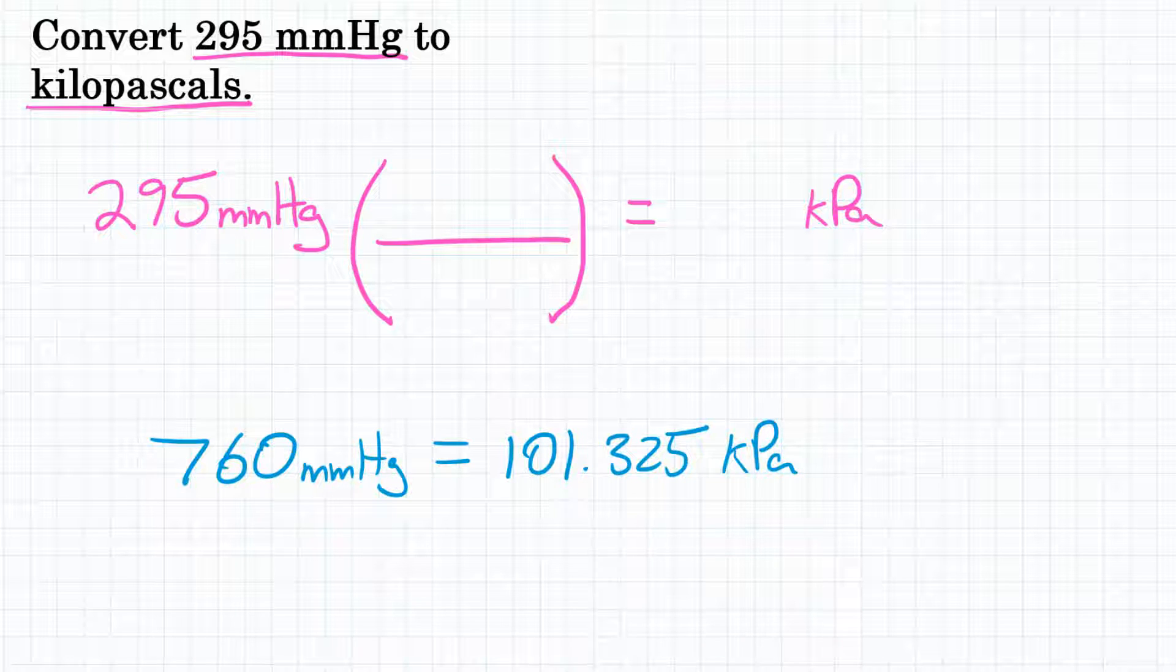That is the relationship we are going to use for this problem. Up above, we need millimeters of mercury to cancel out since that's what we're starting with. So we're going to put that unit on the bottom of our conversion factor.